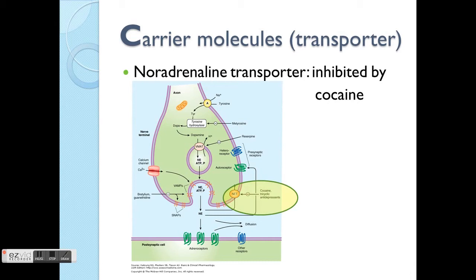Here we talk about the noradrenaline transporter, which is inhibited by cocaine. This is a diagram of neurons — here is the end of the neuron, also called the nerve terminal. This is neuron A and this is neuron B, and they're trying to transport the signal from neuron A to neuron B.